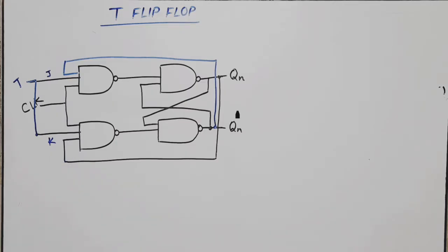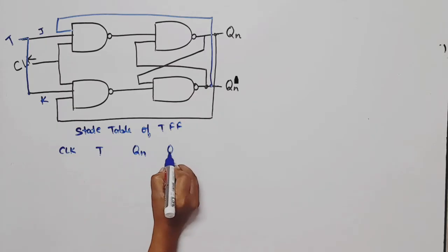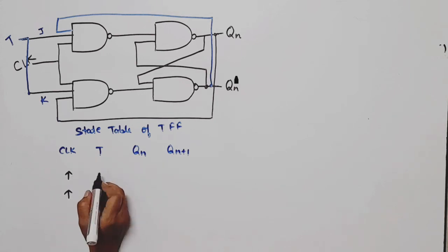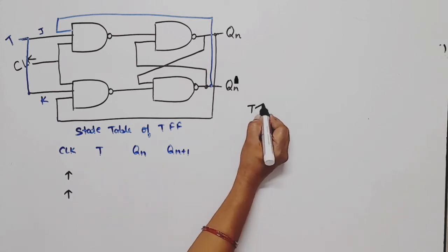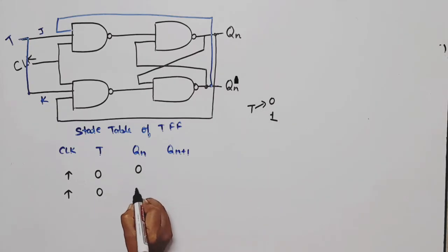First we'll create the state table, then truth table, then excitation table, then state diagram and waveform. So first, we have clock, then input T, present state QN, and next state QN plus one. Now, the clock we assume is active. T has two possibilities - it can be zero or one. If T is zero, then present state can be zero or one, both cases we need to consider. Same way, if T is equal to one, we need to see both cases of present state.